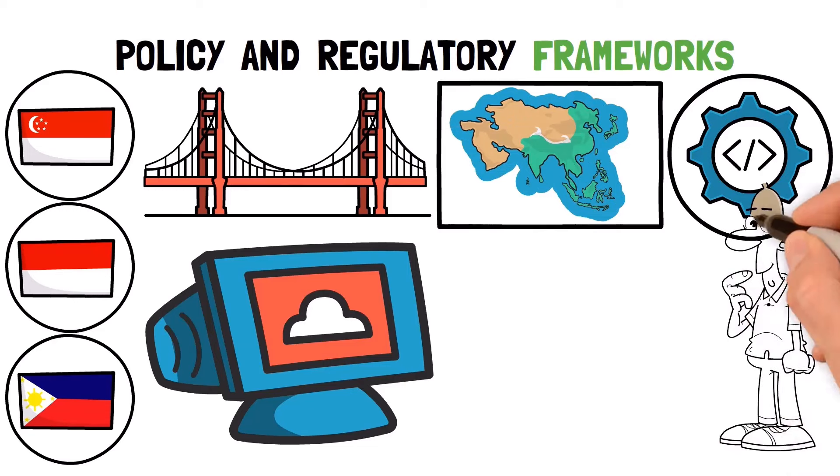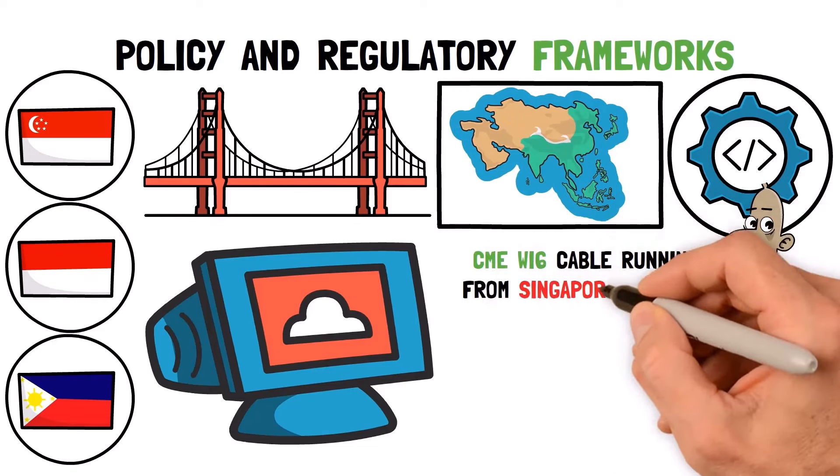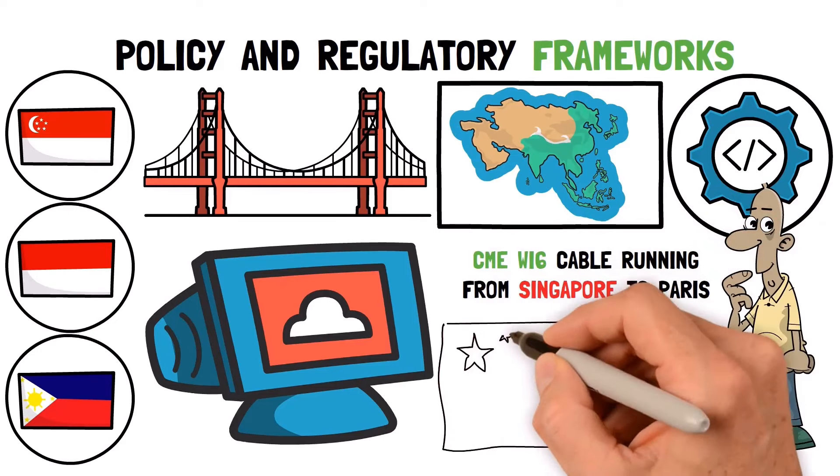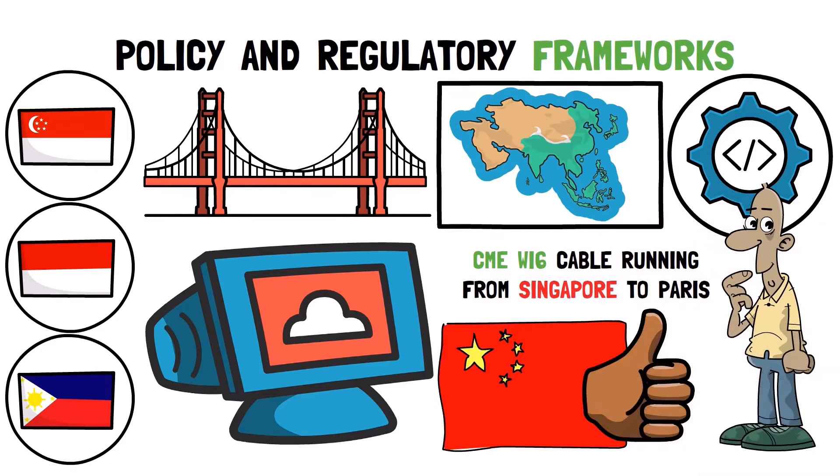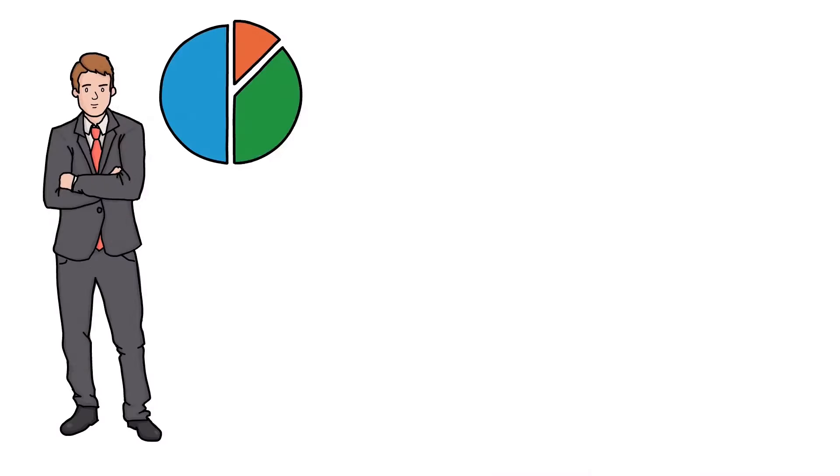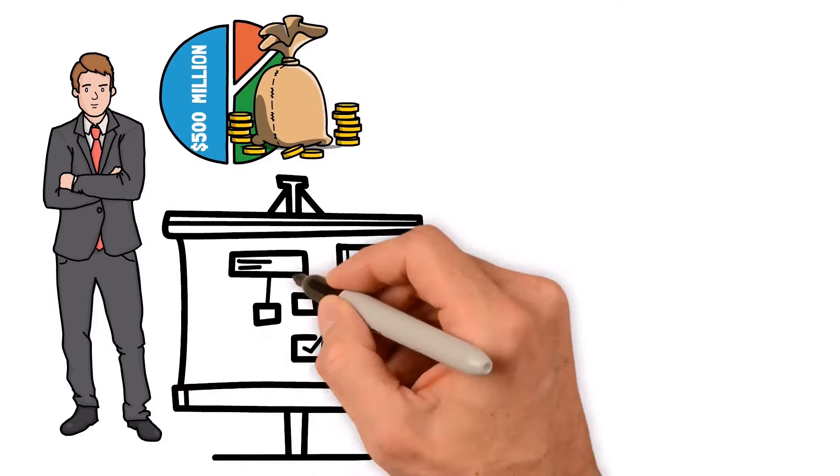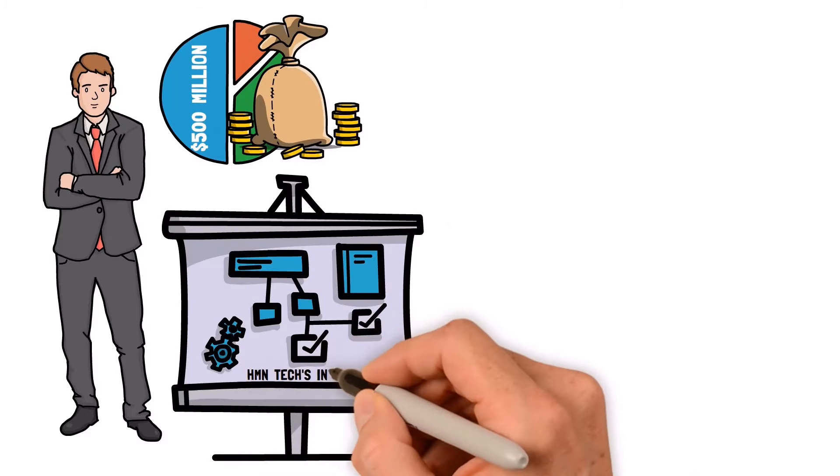Initially, Chinese HMN Tech was favored to build it. The company's bid was by far the most competitive. At $500 million, it was only one-third of the asking price, and the project was expected to raise HMN Tech's international prestige.